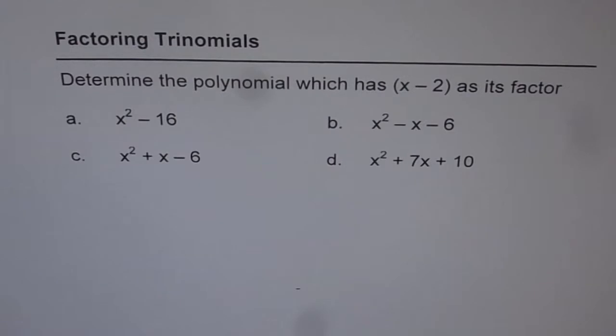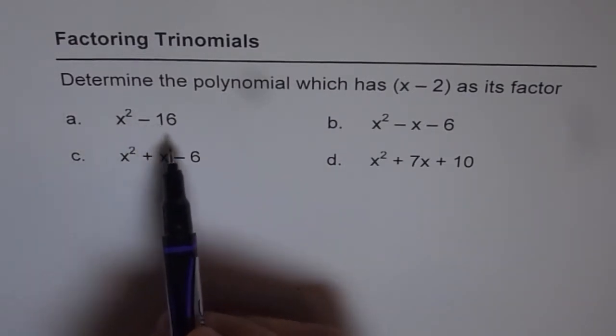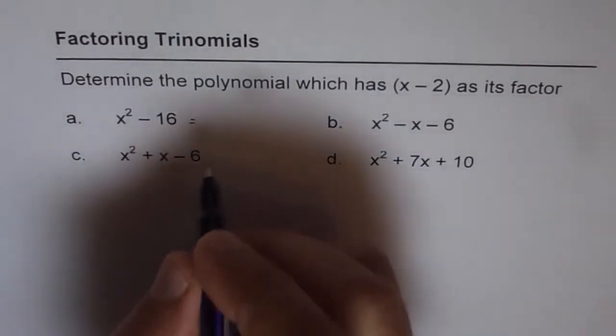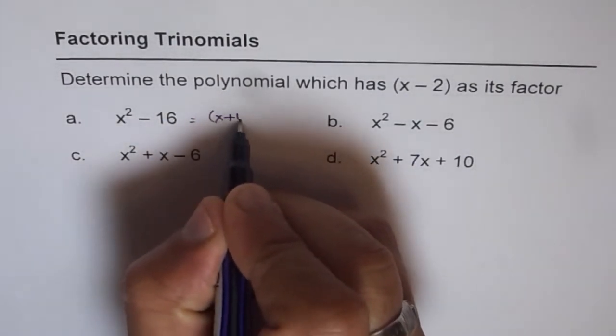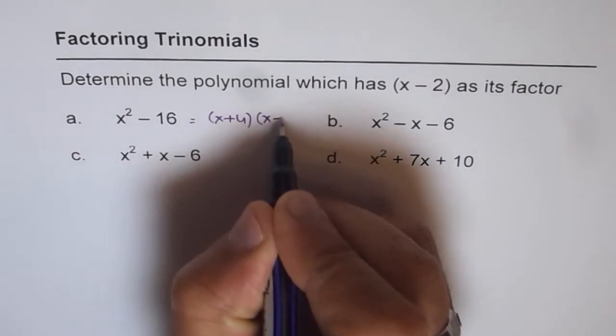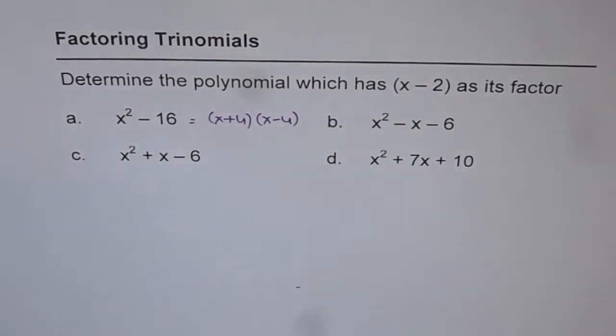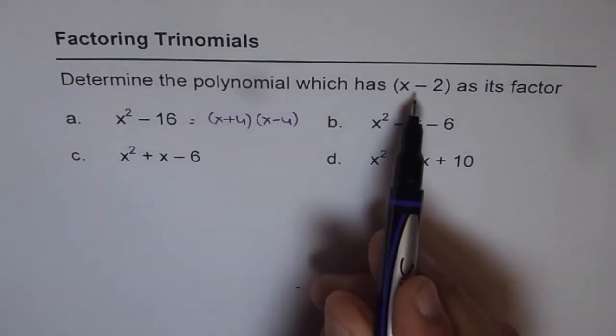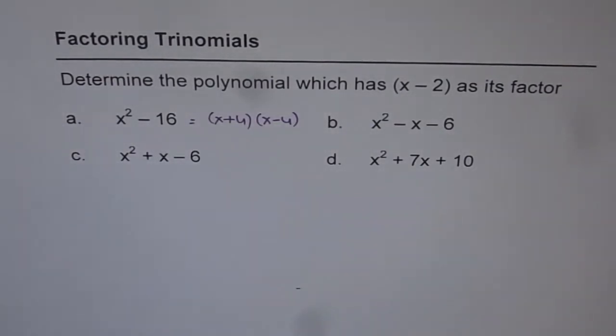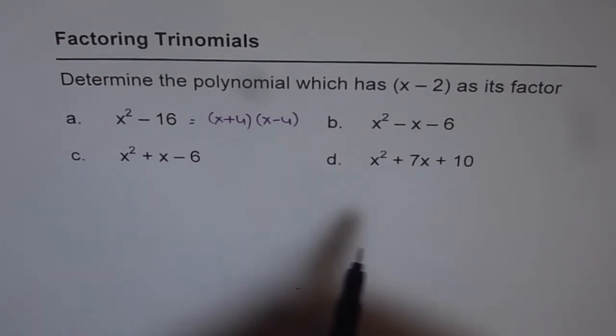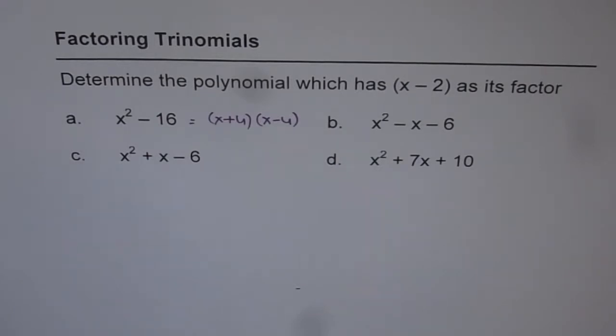One is, of course, you can factor all four of them. So x squared minus 16, you can write this as x plus 4 times x minus 4, right? So it's factored and we can see that x minus 2 is not a factor for this particular polynomial. Likewise, you can factor the other three also and figure out which polynomial has x minus 2 as a factor. This is one way of doing it.